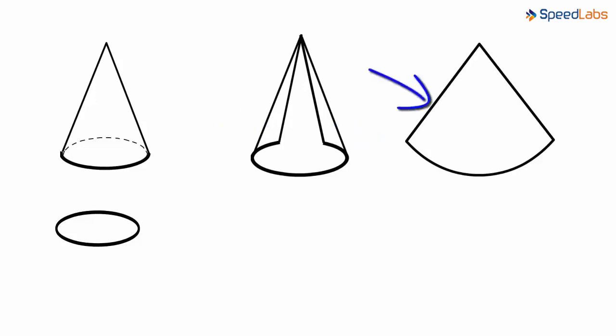And guess what this is? It is a sector of a circle. So the curved surface of a cone when opened up looks like a sector of a circle.